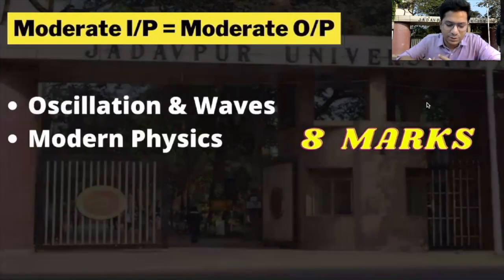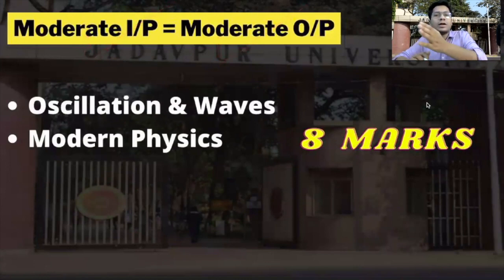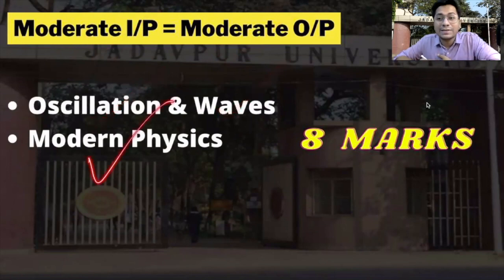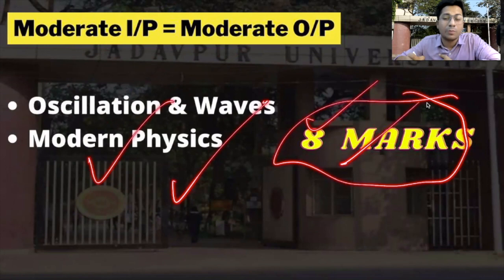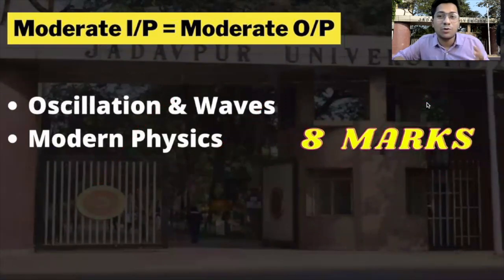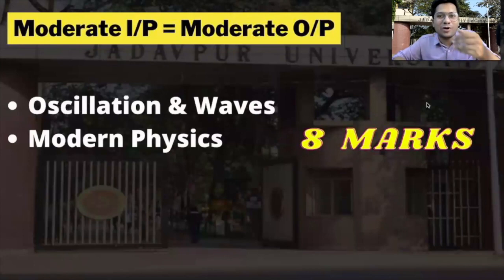Next, we will discuss moderate input and moderate output — you get the right input and the right output. These are oscillations and waves. Next, we will talk about modern physics. These topics are around 1 mark each. If you have prepared these topics and are confident, there will be questions in the exam and you will get the right output.